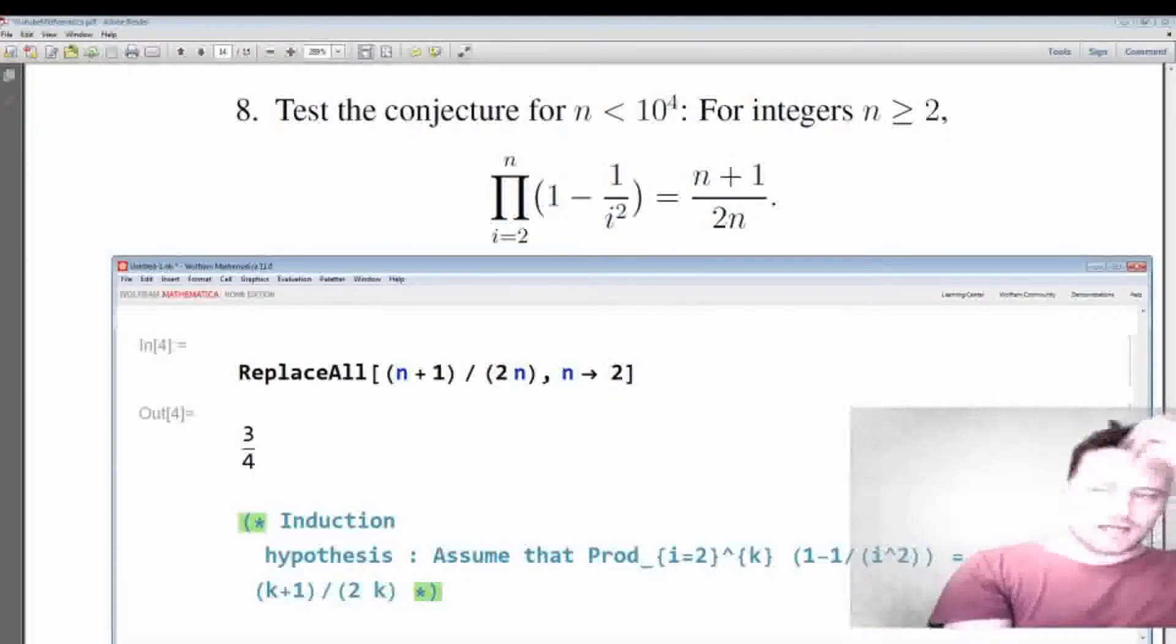And so the idea is that if we can show that this implies the statement for n equals k plus 1, then one domino can knock over the second domino in an analogy of dominoes knocking one another over. Okay, so that means if the result holds true for 2 then it holds true for 3, if it holds true for 4, and so on.